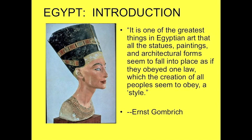The first thing I'd like to do is call your attention to this quote by Ernst Gombrich, who is a great 20th century art historian. In looking at Egyptian art, he notices: 'It is one of the greatest things in Egyptian art that all the statues, paintings, and architectural forms seem to fall into place as if they obeyed one law — a style.' Gombrich is talking about a period of over 3,000 years of architecture following the same stylistic principles.